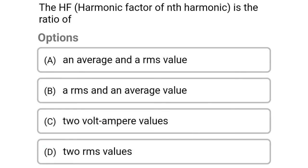Next question: the harmonic factor (HF) of the nth harmonic is the ratio of — option A, an average and an RMS value; option B, an RMS and an average value; option C, two volt-ampere values; option D, two RMS values. So the correct answer is option D, two RMS values.